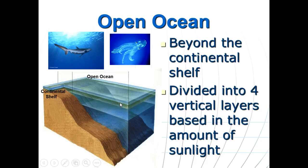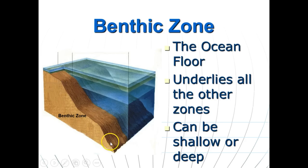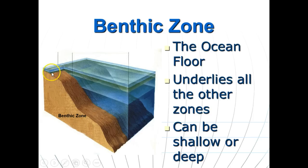The oceanic zone, or open ocean, is basically the rest of the ocean beyond the continental shelf. We'll talk about how it's divided into layers as we go down in a moment. One more zone to mention is the benthic zone — this is the bottom of the ocean, whether you're in shallow water along the continental shelf or all the way down at the abyss. Any time you're on the ocean floor, that is the benthic zone.